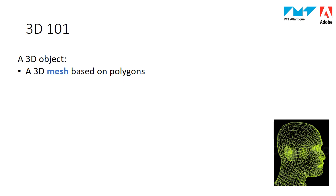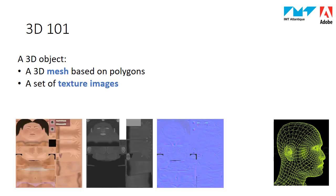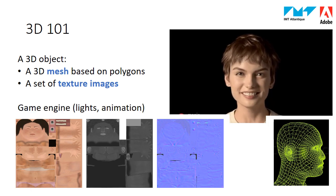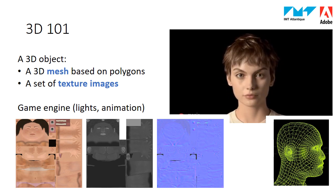A 3D object is basically composed of a 3D mesh, which is the geometry of this object based on polygons. The research community has produced a lot of work on mesh generation, mesh compression, and mesh delivery. Another part of the object is a set of textures. The texture images are images which apply on the mesh surface to provide colors and material aspects. Then the game engine processes a scene by applying lights, typically with ray tracing techniques, and animation in order to generate photorealistic scenes, such as this photorealistic woman from Magic Leap.